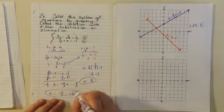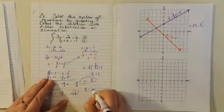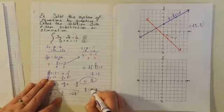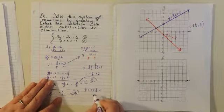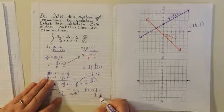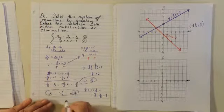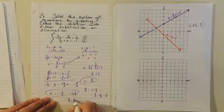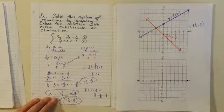We can check that with the other equation. 4/5 equals negative of negative 9/5, which is positive 9/5, minus 1. That gives us 9/5 minus 5/5, which sure enough equals 4/5. So our ordered pair is negative 9/5 and positive 4/5. You could use negative 9/5 or negative 1 and 4/5 — either one would be correct.